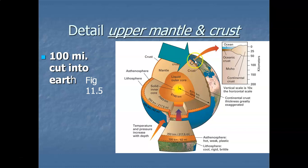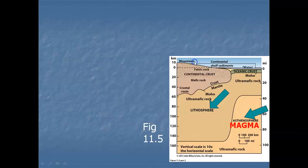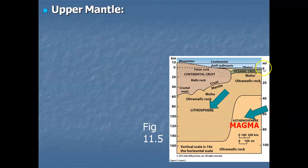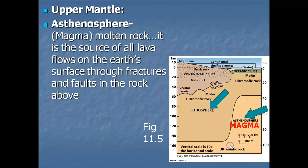We're going to take a 100-mile cut into the earth and go over the terminology of the upper mantle and earth's crust. Here at sea level (zero) and 100 miles into the earth, the tan area represents the upper mantle and above it the earth's crust. For both zones we can identify two distinct areas.